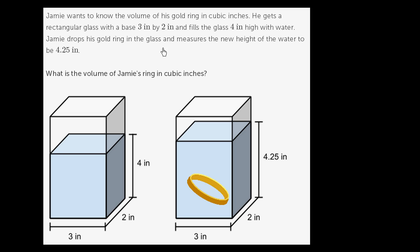Jamie drops his gold ring in the glass and measures the new height of the water to be 4.25 inches. What is the volume of Jamie's ring in cubic inches?